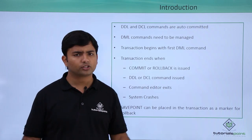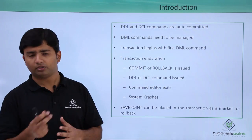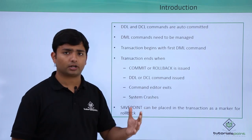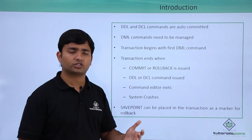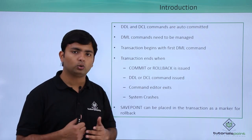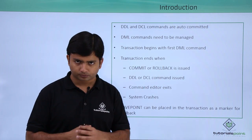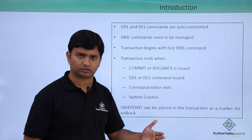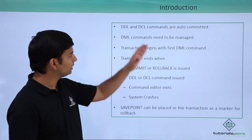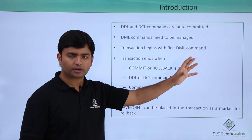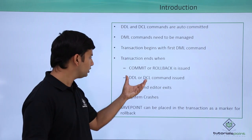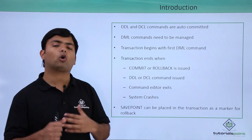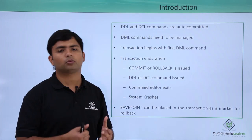If everything is going smoothly, anyone writing the commands can use the COMMIT or ROLLBACK command. COMMIT will save the changes while ROLLBACK will undo all the changes made. You can also end a transaction by issuing a DDL or DCL command. These are auto-committed statements, so whenever you execute a DDL or DCL command, it will commit all the uncommitted DMLs as well.